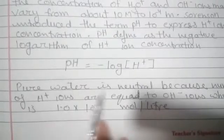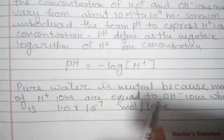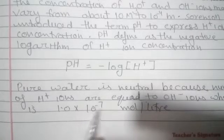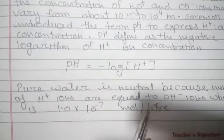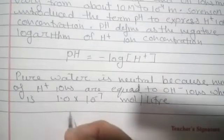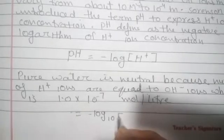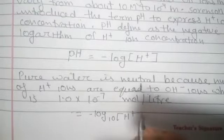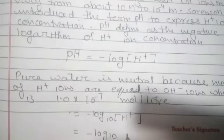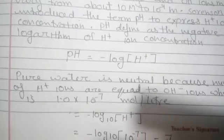Pure water is neutral because the number of H plus ions are equal to OH minus ions, which is 1 into 10 to power minus 7 mole per liter. So the pH of the neutral solution minus log 10 to power minus 7 is equal to 7.